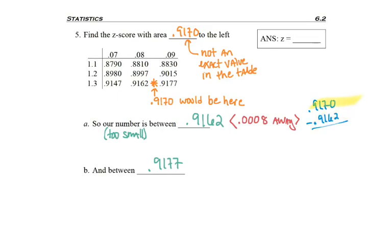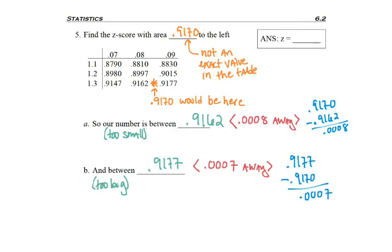Same thing with the other number. This one happened to be too big - it's bigger than the number I'm looking for - but that's not what's important. Its distance is important: 0.0007 away. Again, I just subtracted the number I was working with from the number I wanted to figure out the total distance.